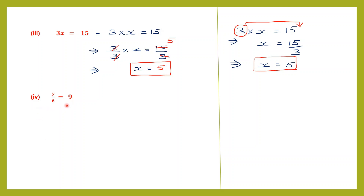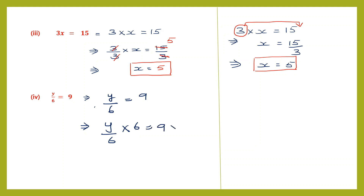Question 4: y ÷ 6 = 9. We need only y, and since 6 is division, we multiply both sides by 6. So (y/6) × 6 = 9 × 6. The 6s cancel, leaving only y on the left. On the right-hand side, 9 × 6 = 54. So y = 54.